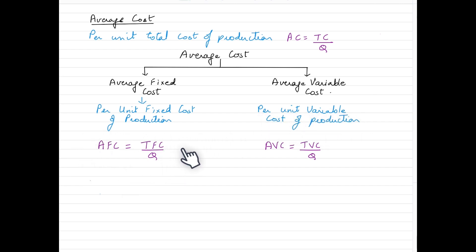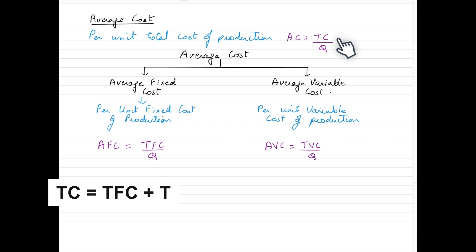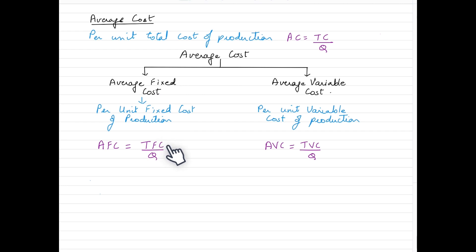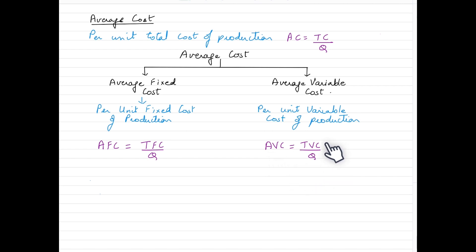Total cost has two components — as you may remember from our previous video, total cost comprises total fixed costs and total variable cost. So average fixed cost is calculated as total fixed costs over total output, whereas average variable cost is calculated as total variable cost over total output.